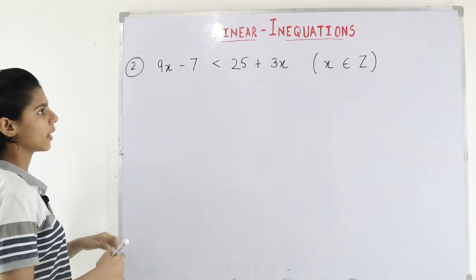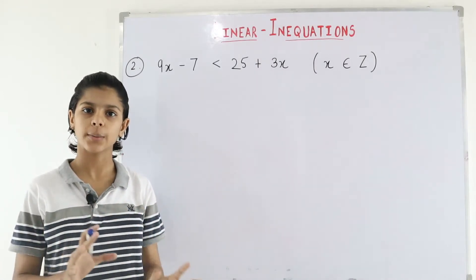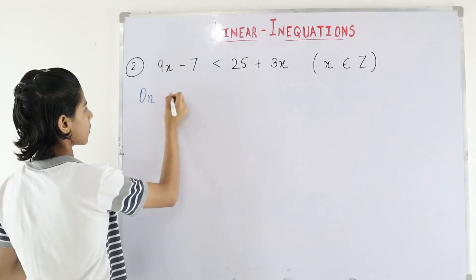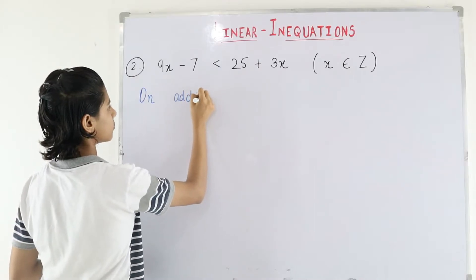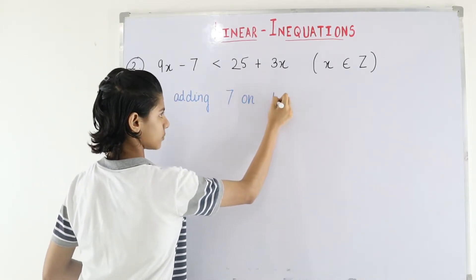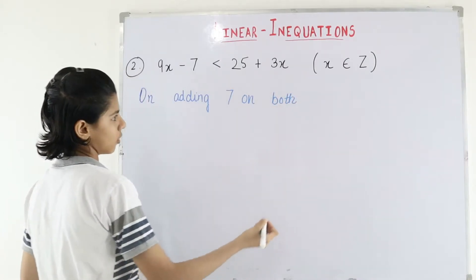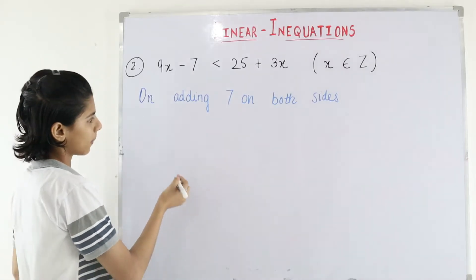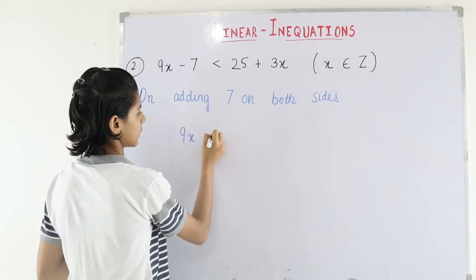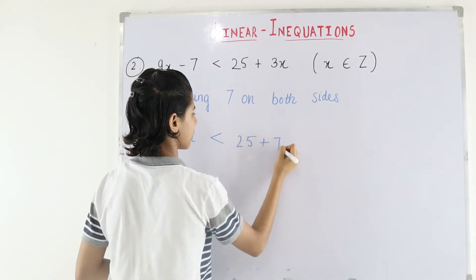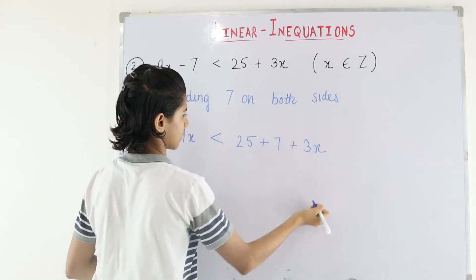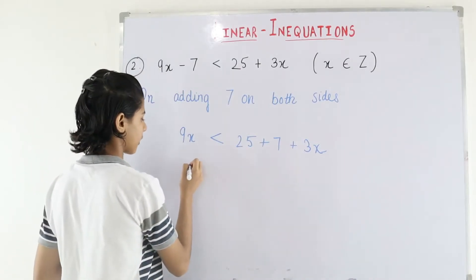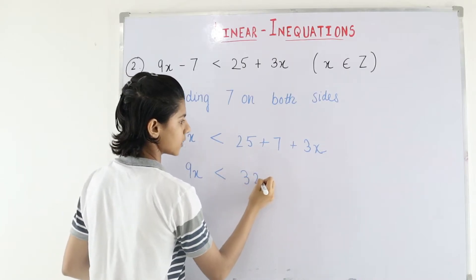Now we will solve this. First, we shift the 7 to the other side — we group all constant terms on one side. On adding 7 on both sides — if we add plus 7 here, it cancels, leaving 9x. On the other side: 25 plus 7 plus 3x. 25 plus 7 is 32, so we get 9x is less than 32 plus 3x.